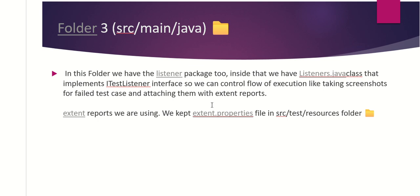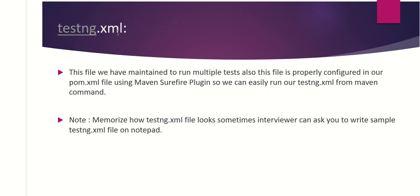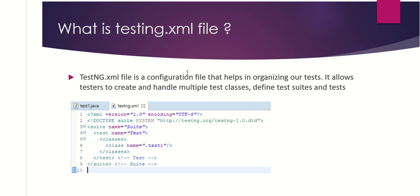Inside the listener package we have a listener.java class that implements the ITestListener interface, so we can control the flow of execution — like taking screenshots for failed test cases and attaching them to the Extent Report. We kept the extent.properties file in the src/test/resources folder. The testng.xml file is maintained to run multiple tests, and this file is properly configured in our pom.xml using the Maven Surefire plugin, so we can easily run our testng.xml from Maven.